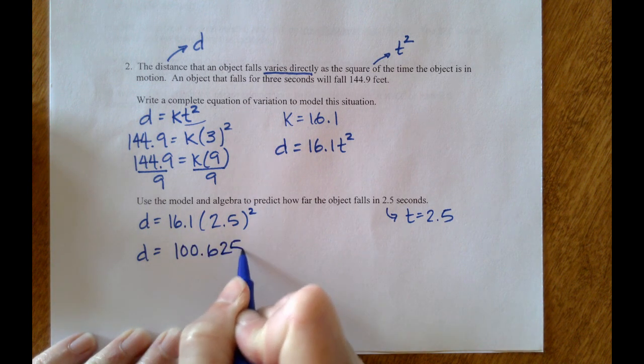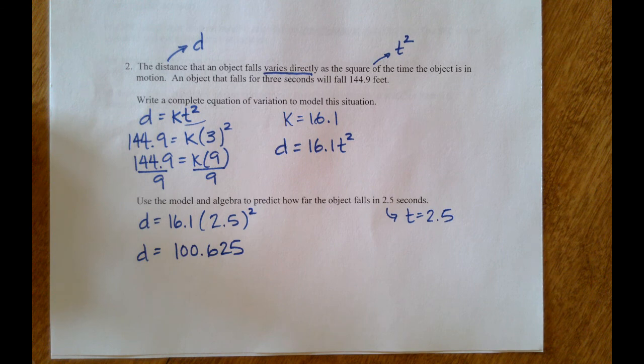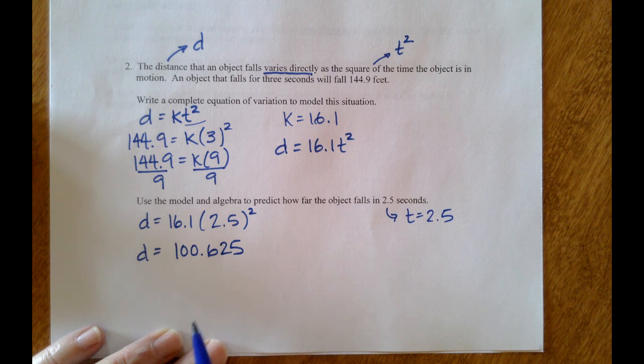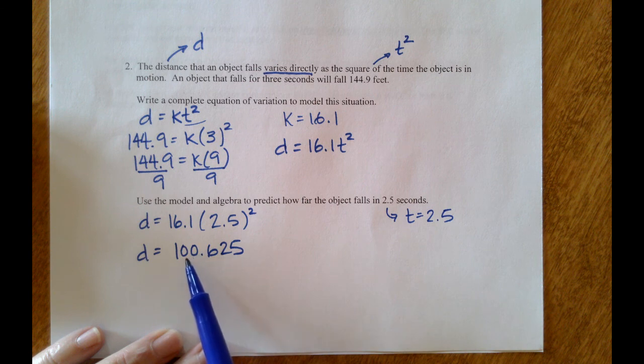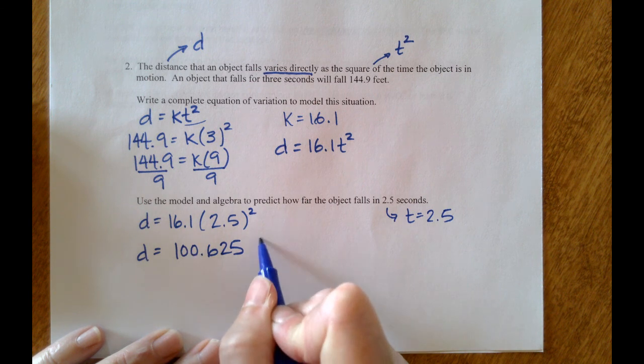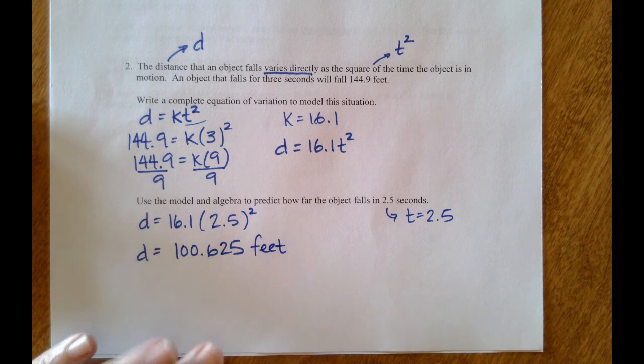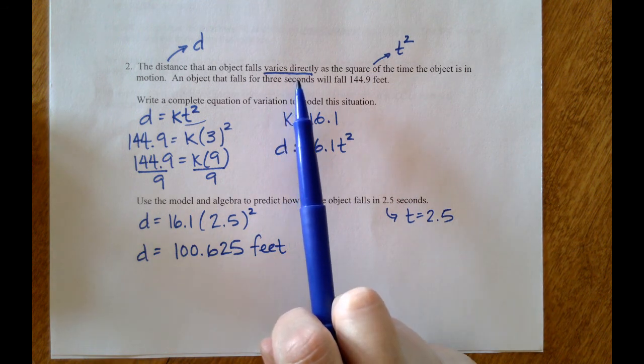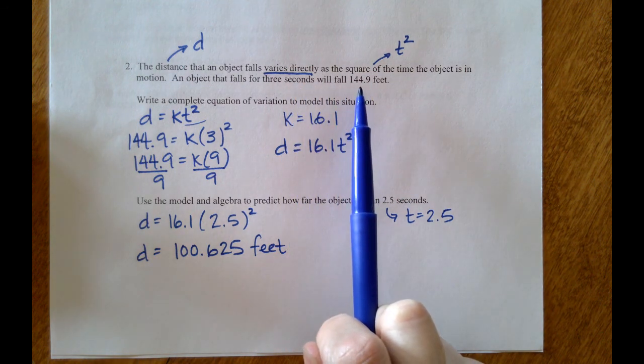I get 100.625 for a calculated value for this portion of the problem, and we're looking for how far the object falls in 2.5 seconds. This would be 100.625 feet. They told us in the beginning of the problem that we are measuring in feet.